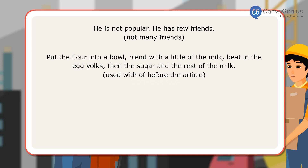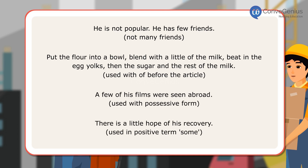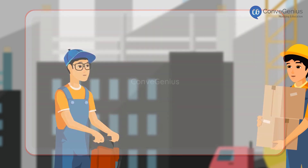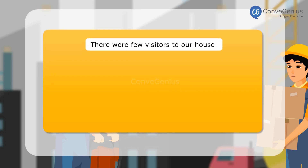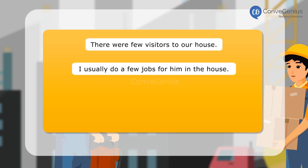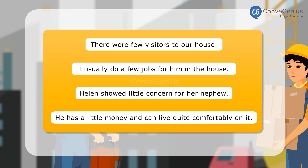Used with 'of' before the article: 'A few of his films were seen abroad.' Used with possessive form: 'There is a little hope of his recovery' — used in a positive term meaning some. Here are some more example sentences: 'There were few visitors to our house.' 'I usually do a few jobs for him in the house.' 'Helen showed little concern for her nephew.' 'He has little money and can live quite comfortably on it.'